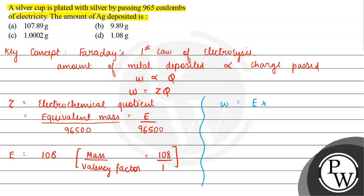Plugging in the values: 108 times 965 divided by 96500. Solving this gives w equals 1.08 grams. So our answer is option D, 1.08 grams. I hope you understood the question well, best of luck.